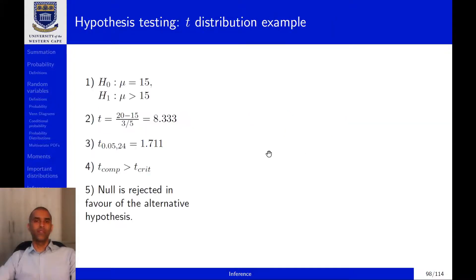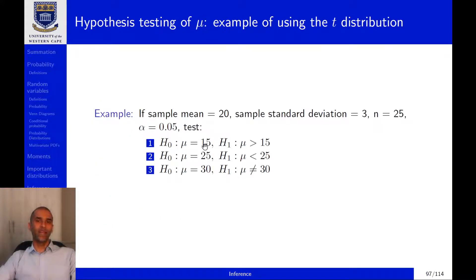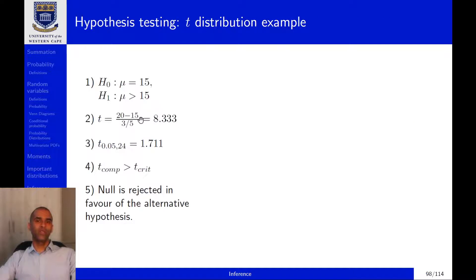Step one: write down the null and alternative hypotheses. Step two: calculate the test statistic. We plug in the given numbers, remembering that the hypothesized value for mu — in this case 15 — goes in the numerator of the test statistic expression. Once we do that calculation, we end up with a value of 8.333.